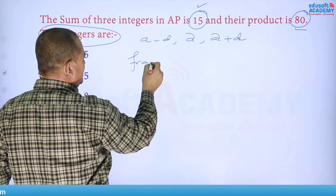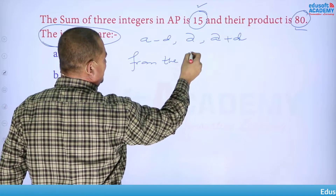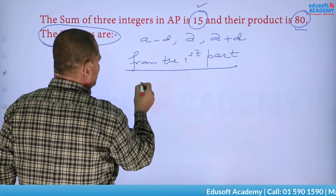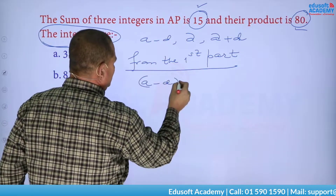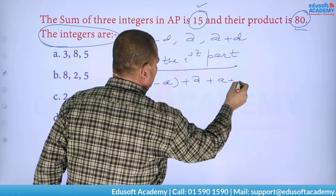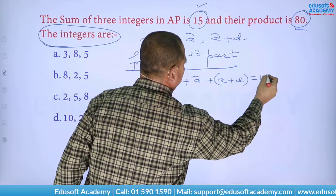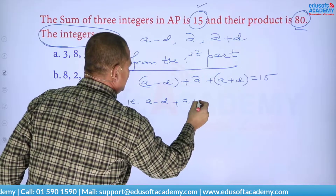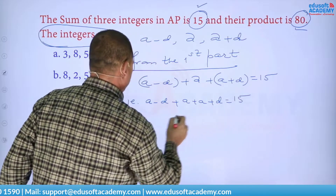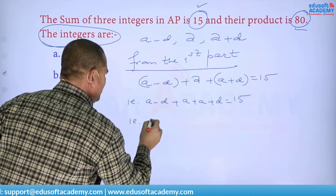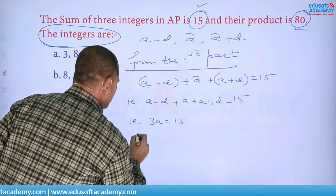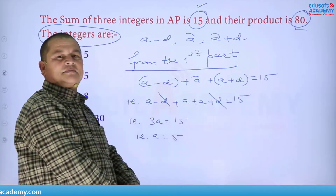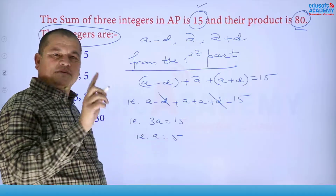From the first part of the question: sum of three integers in AP is 15, so (a−d) + a + (a+d) = 15, giving us 3a = 15, therefore a = 5. The d terms cancel out.